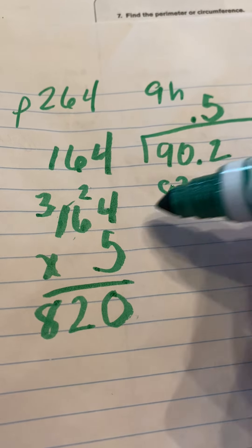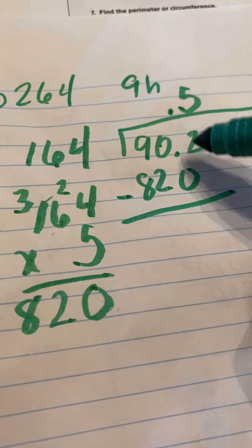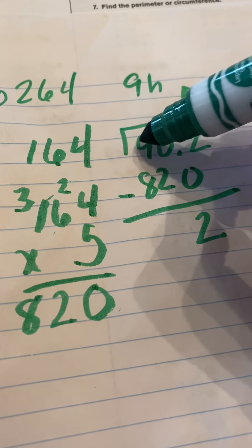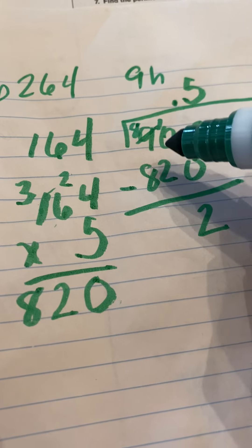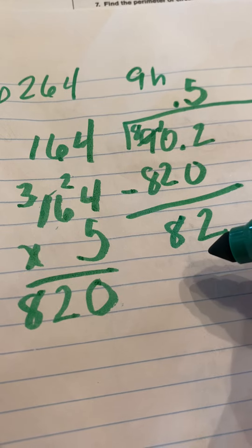So let's multiply by 5 and make sure we don't have 164 left over. So we know that it's 820. And let's subtract. So we have 2. 0 becomes a 10. And we'll borrow that 1 from here. That'll become an 8.